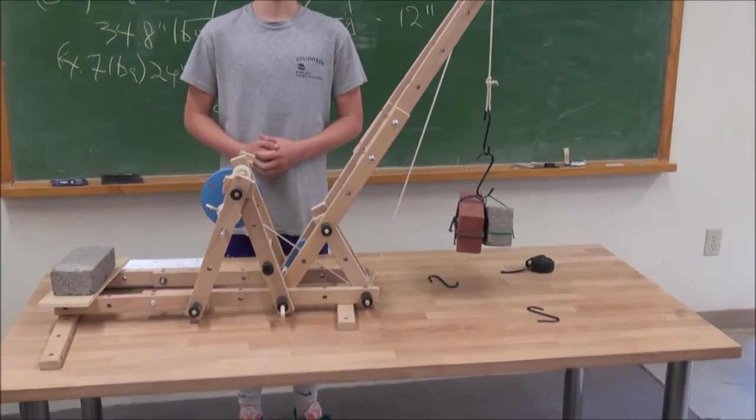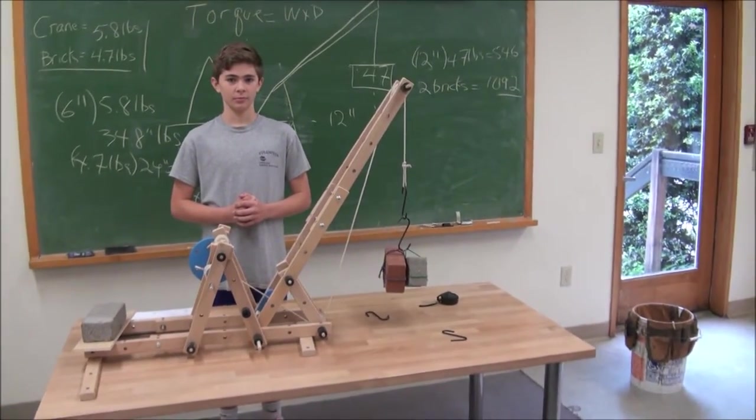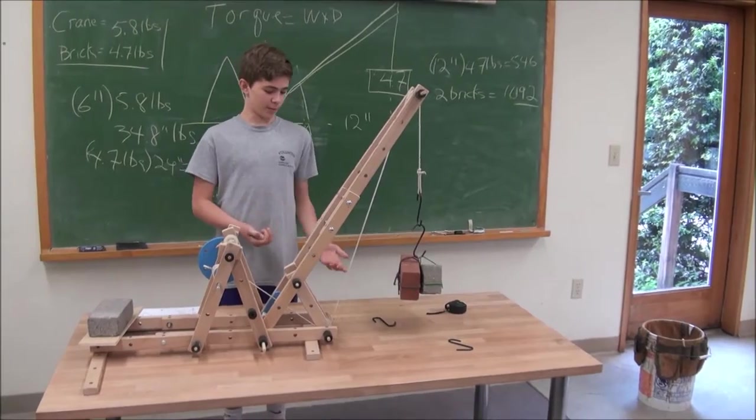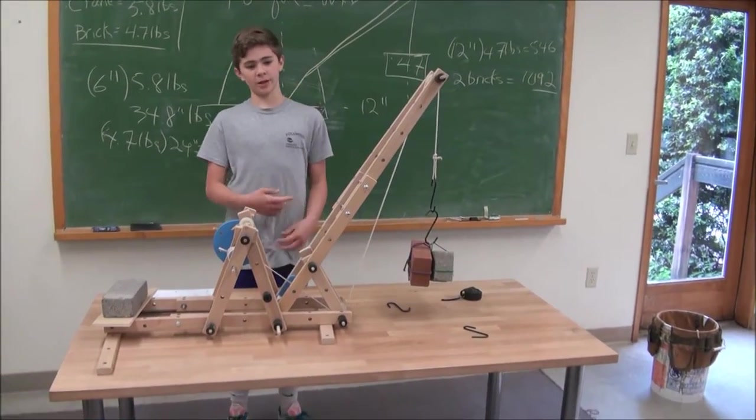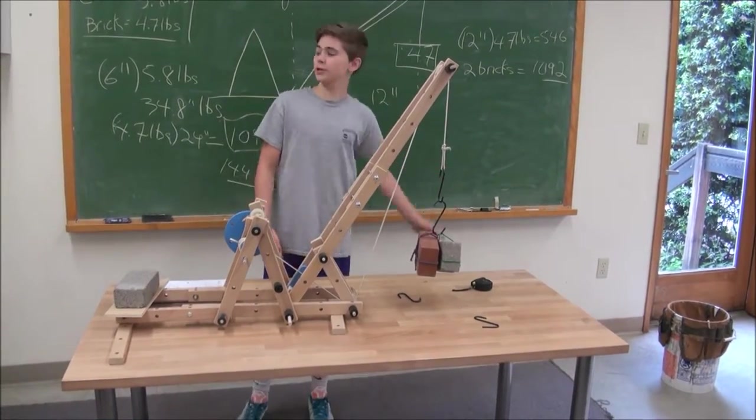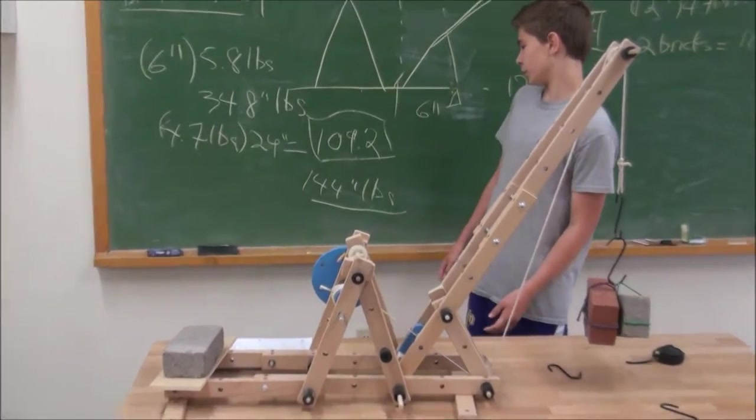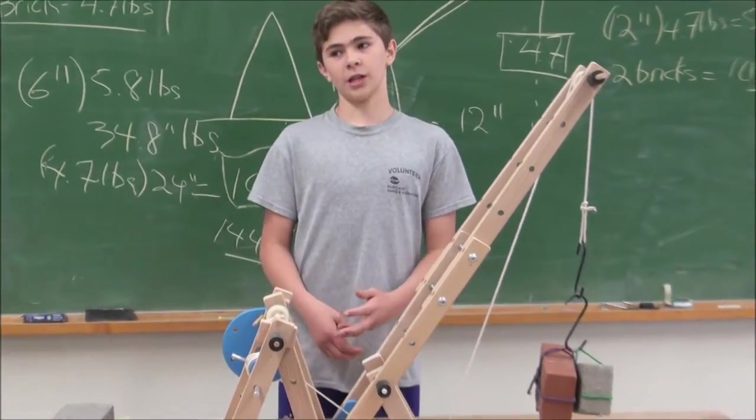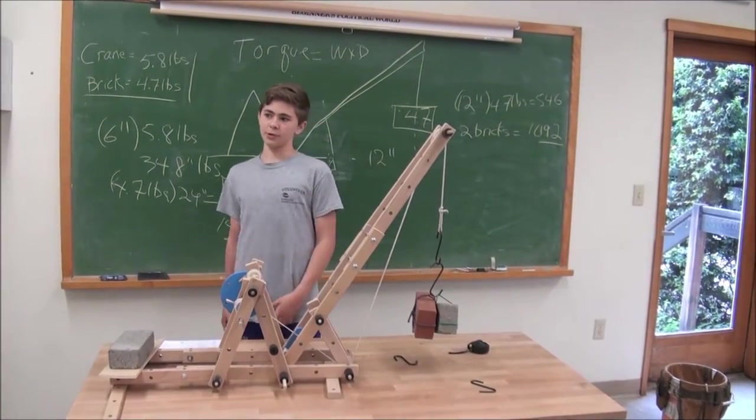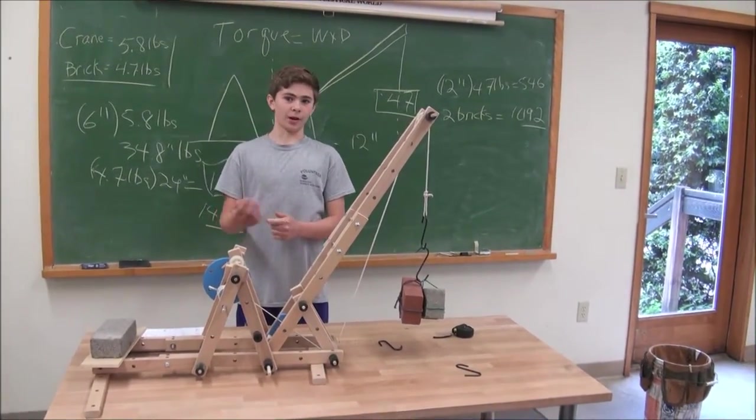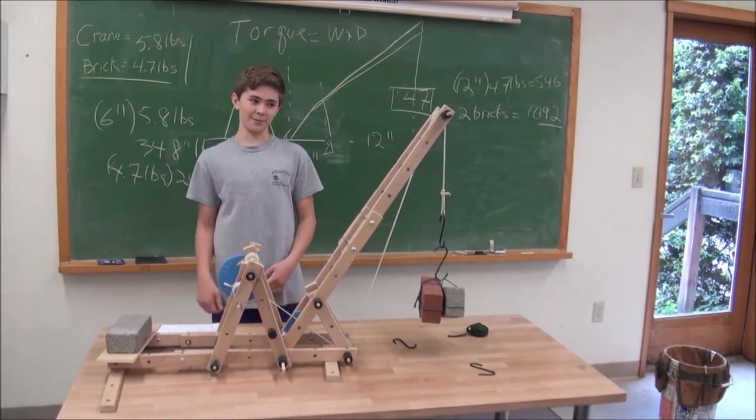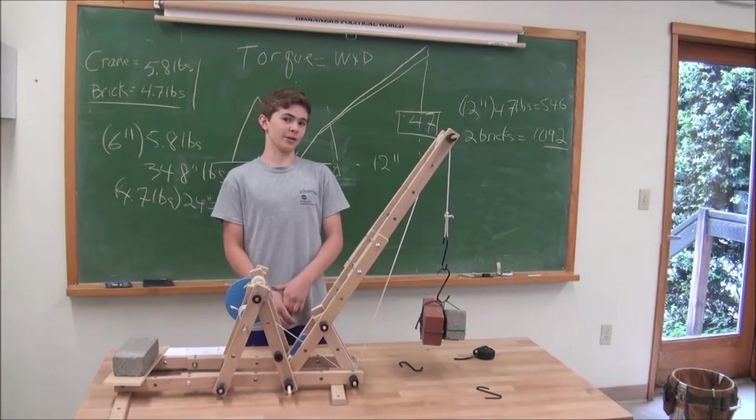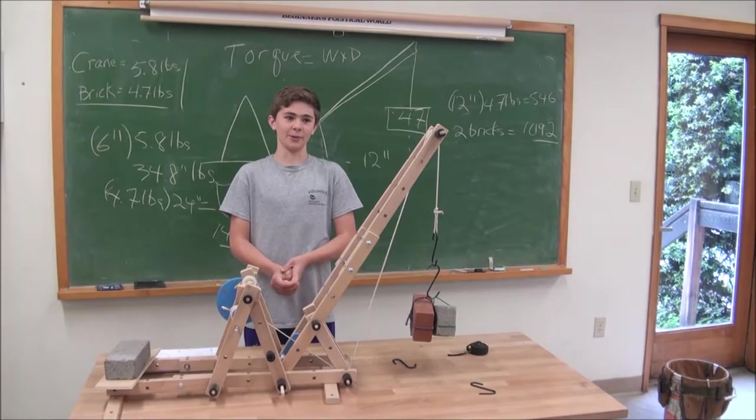Now what would happen if it was a windy day and the load starts to swing? Maybe it would fall over because the 109.2 and 144 are relatively close, so that's called a safety factor. We need to have a greater number in between them on this side, making it bigger so that it won't tip over under circumstances like wind.